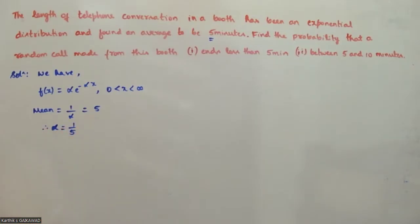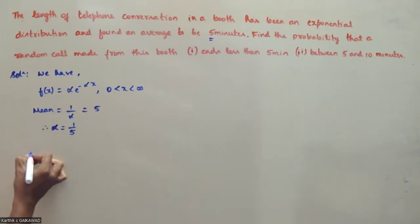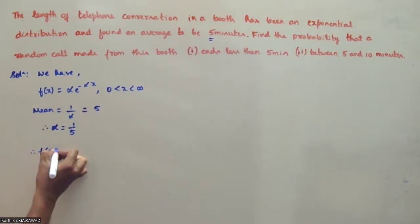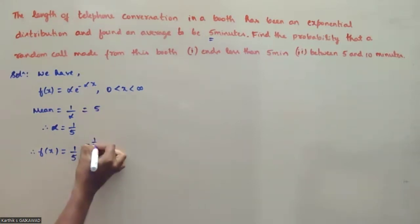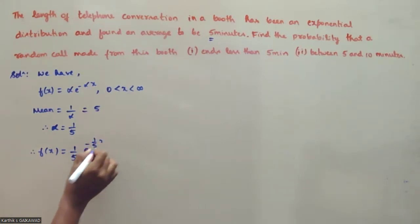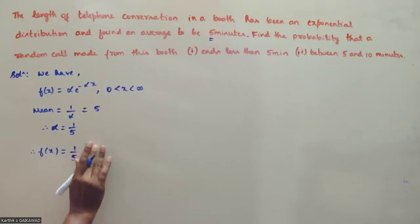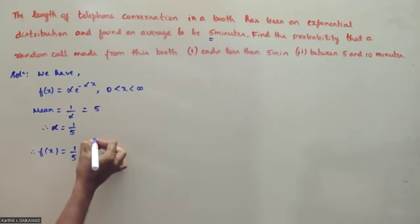With alpha = 1/5, f(x) = (1/5) * e^(−x/5) for x between 0 to infinity.